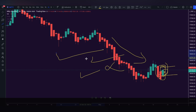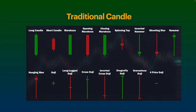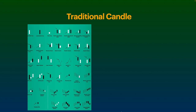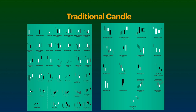Now that you know what Heiken Ashi is and how to plot it on the chart, let's understand the rules we need to follow to make consistent profit. Many beginners who use traditional candlestick patterns try to learn all types of candles — marabuza, short, doji, hammer, shooting star. There is a book with 300-400 different types of candlestick patterns, but learning all of them does not make you a better trader. A good trader is not the one who learns everything, but the one who learns what is necessary. With this Heiken Ashi strategy, there are only three patterns you need to know.